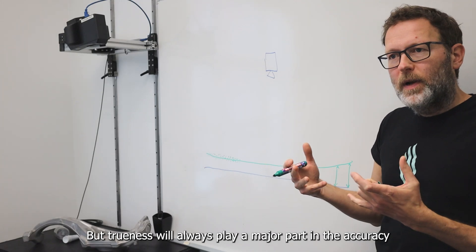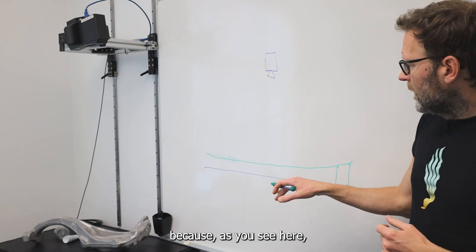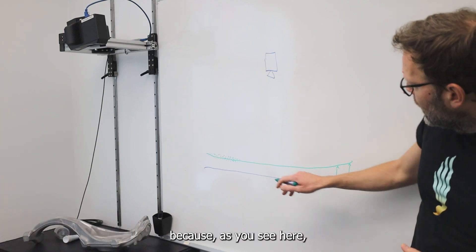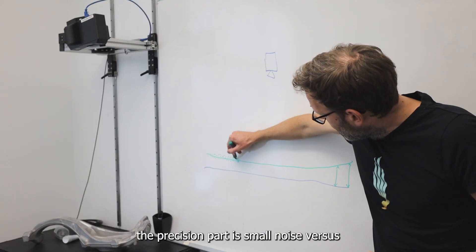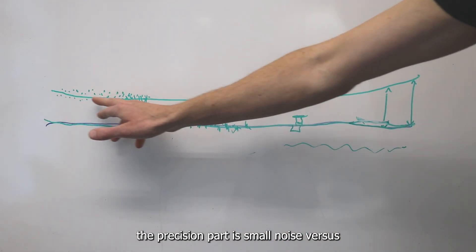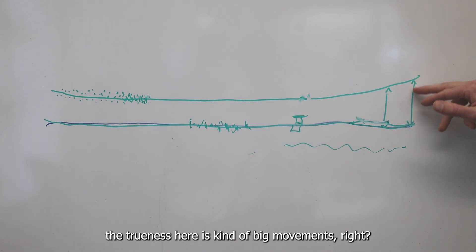But trueness will always play a major part in accuracy, because as you see here, precision part is small noise, versus the trueness here is kind of big movement, right?